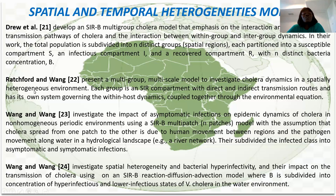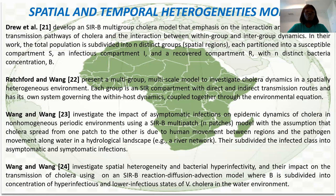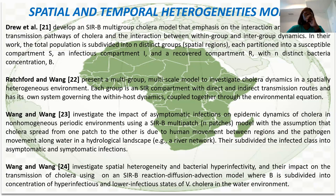Then Richard Ford and Wang presented a multi-group mathematical model to investigate cholera transmission in heterogeneous environments. Each group is an SIR compartment with direct and indirect transmission routes. They also started to look at in-host dynamics coupled with the environment — having three different components: SIR for the human population, within-host dynamics of the bacteria, and environmental equations. These three sub-models came together in a system of ordinary differential equations.